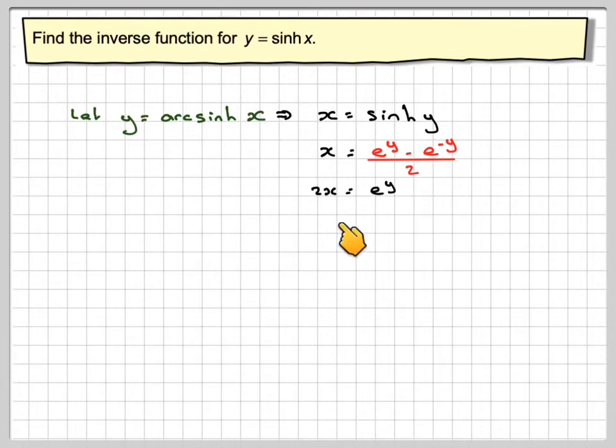Multiply by 2, we get 2x is equal to e to the y minus 1 over e to the y, because e to the minus y means that. Multiply by e to the y, we get 2x e to the y equals e to the 2y minus 1.